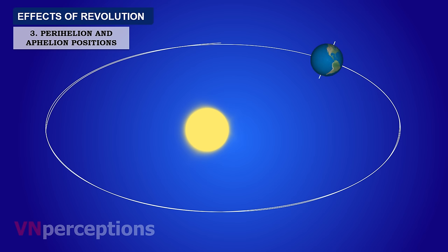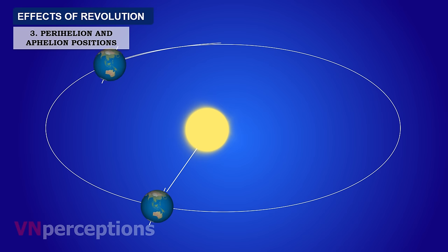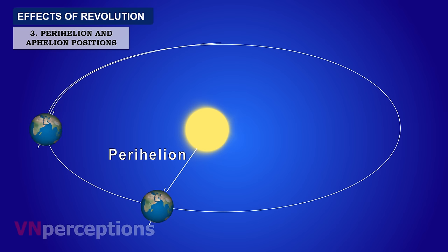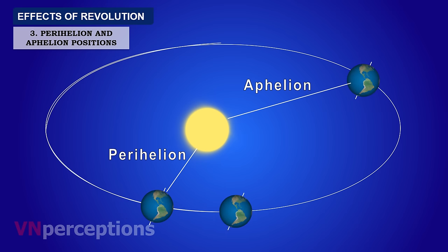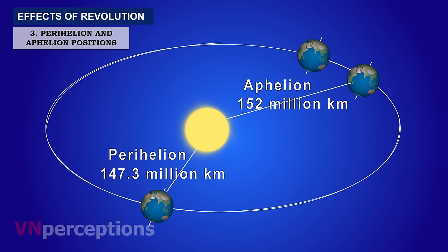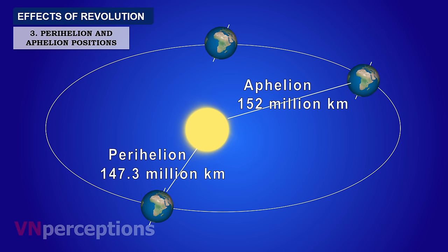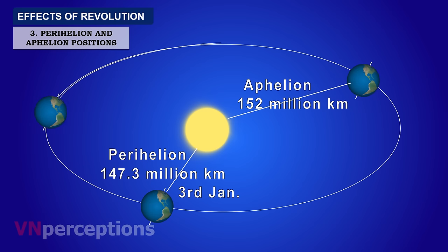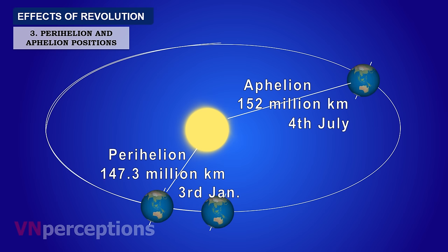As the earth revolves around the sun, there are times when it is closest to the sun — called perihelion — and when it is furthest, called aphelion. When closest, the distance is 147.3 million kilometers, and when furthest, it is 152 million kilometers. The minimum distance is reached on January 3rd, and the maximum distance — aphelion — occurs on July 4th.